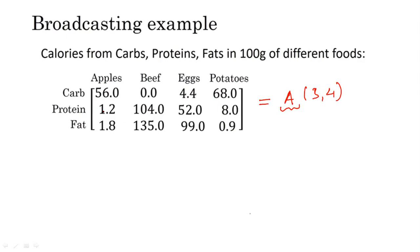How can we find the percentage of calories that we get from each of these items — carbs, proteins, and fat — in combination? If I want to find the percentage of calories I get from carbs when taking 100 grams of apples, I first need to add all three elements in that column.